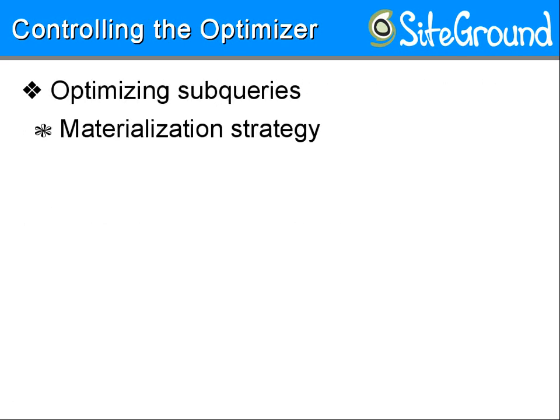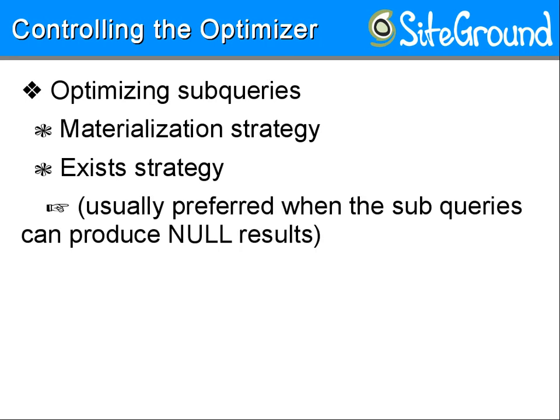Materialization is an optimization scheme that creates temporary tables — you can disable it. For temporary tables, you can create a temporary filesystem in memory so all temporary tables are created in RAM rather than on disk, giving you memory performance without the disk overhead. The EXISTS strategy is used when you have subqueries that need to be compared in joins — sometimes disabling it and using materialization instead is faster. You can control all of this with the optimizer_switch setting.